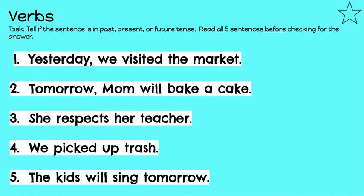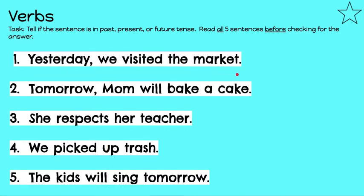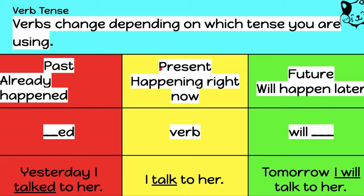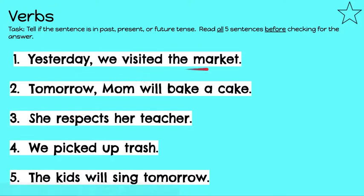So let's check. Number one: Yesterday, we visited the market. What is the action that happened in the sentence? The action is the word visit. Do you notice anything about this word? Yes, it has -ed. Remember, -ed is when we are using a verb in past tense. So this sentence happened in the past.